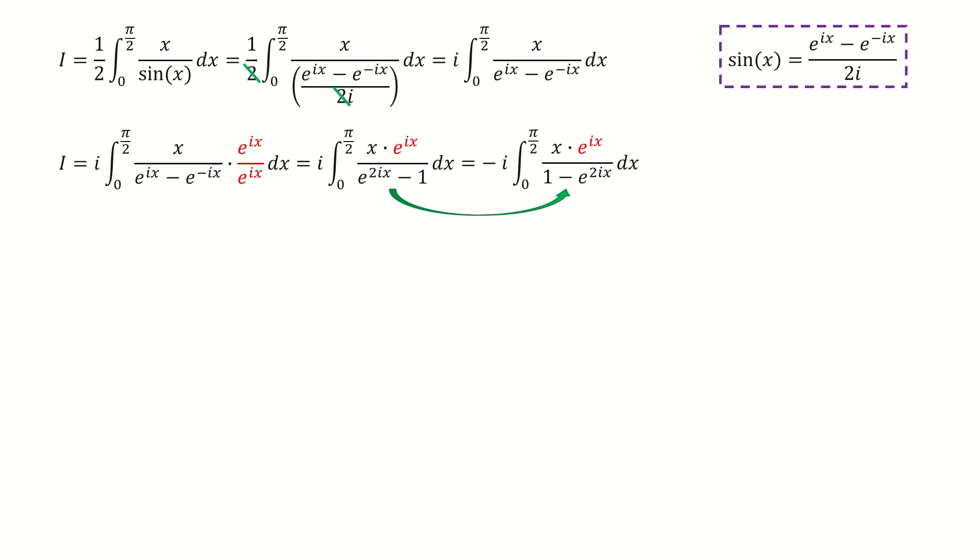Here, we switch the denominator, and then we put negative sin in front. Next, we put the numerator in front. We want to make a power series expansion for this term.